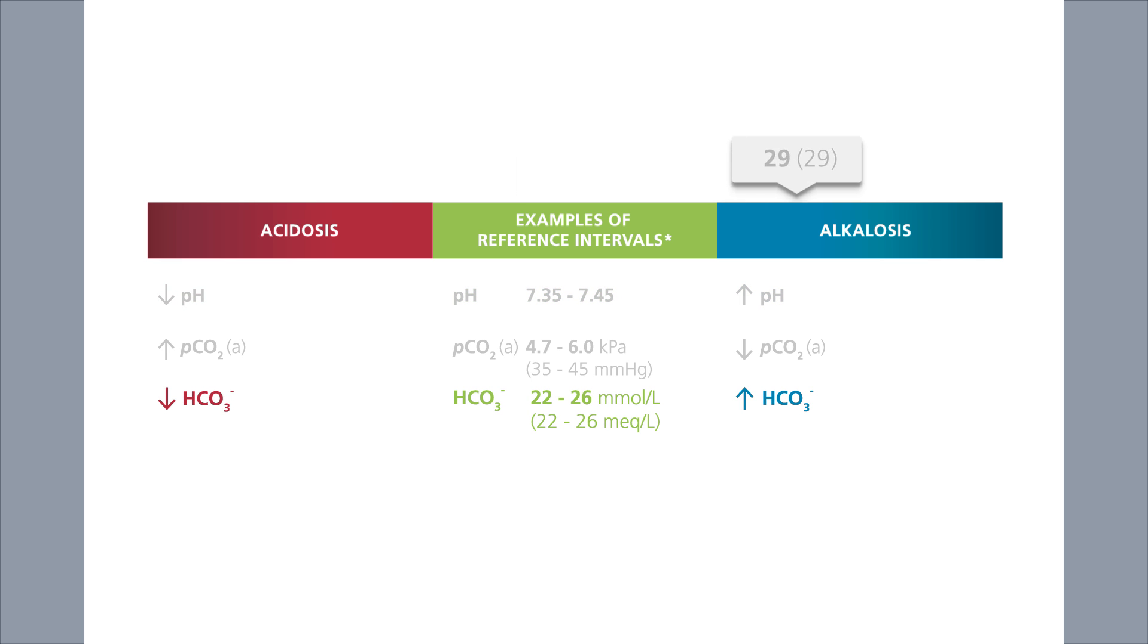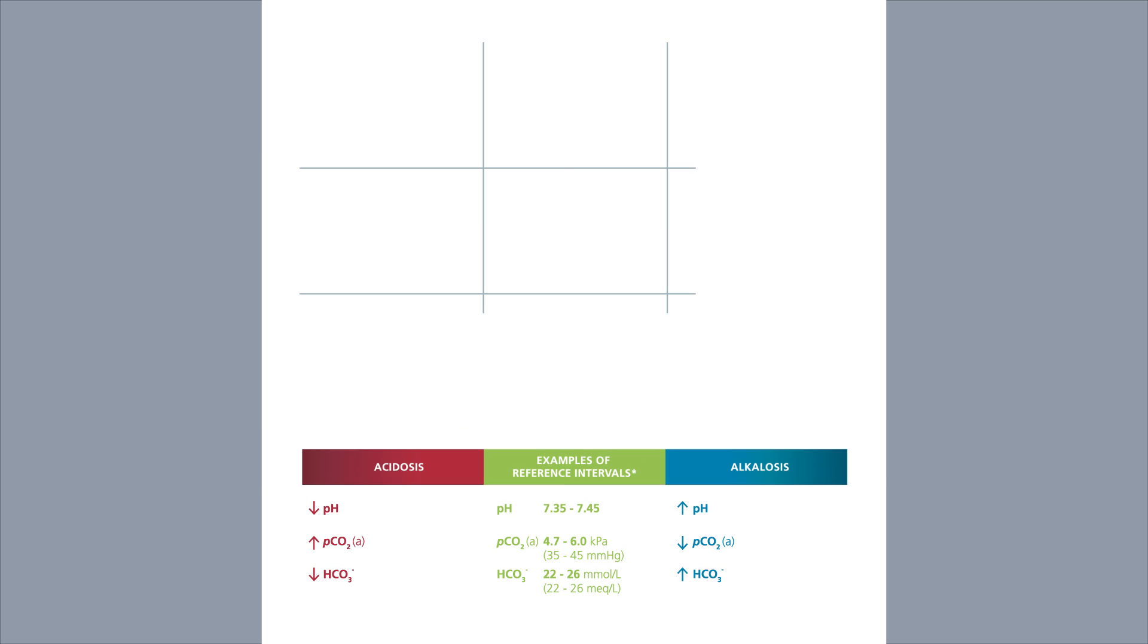A bicarbonate level above the reference interval is a sign of alkalosis, whereas a level below is a sign of acidosis. With PCO2, you need to be careful because a level above the reference interval is a sign of acidosis, whereas a level below is a sign of alkalosis.